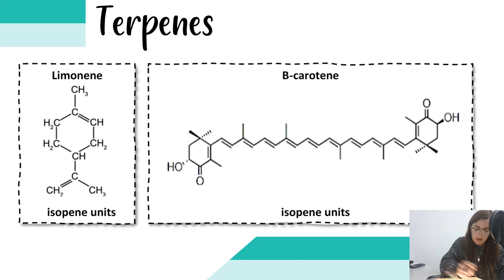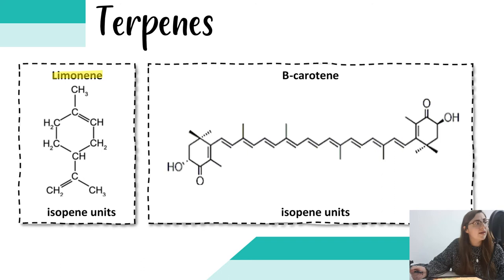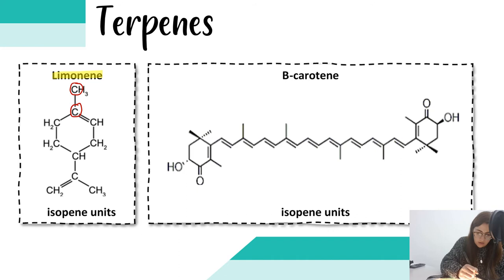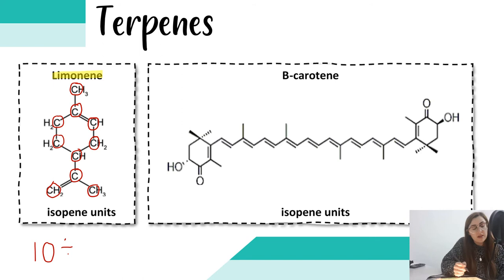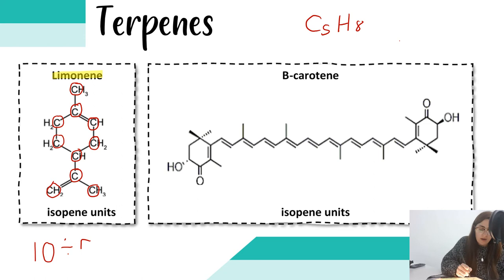Essential oils like limonene are made up of isoprene units — essential oils are terpenes. To work out how many isoprene units are in a molecule, count the number of carbons. Limonene has 10 carbons. Each isoprene unit contains 5 carbons because isoprene is C5H8. Dividing 10 carbons by 5 gives 2 isoprene units.